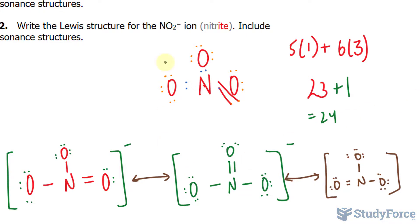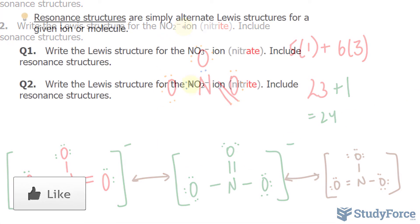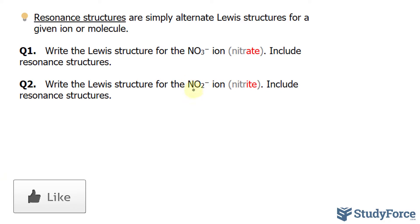Now let's try nitrite, NO2 minus. Nitrogen is the lesser of the two atoms' electronegativity, so we'll write down nitrogen in the middle, oxygen to its sides.